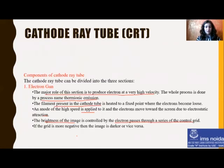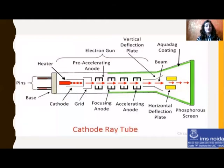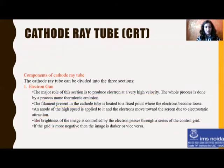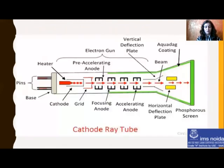If the grid is more negative, the image will be darker. When the heating filament is heated, electrons start being emitted — these are negative charge particles. After the electron gun, there is a grid element. The grid element basically controls these electrons and controls the speed of the electrons. The brightness of the image is controlled by the electrons passing through the series of the control grid. If the grid is more negative, the image will be darker — meaning more negative charge on the grid results in a darker image. From this grid, the electrons pass through.